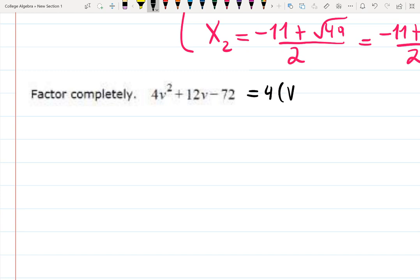So, for the first one, I actually will factor it out. And it's going to be very convenient because 4 can be just factored out. 4, this is my v squared plus 3v, and then I will have minus 18. Here it is.